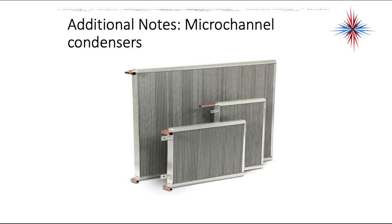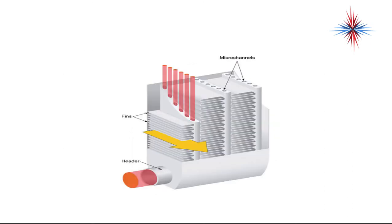Microchannel condensers are becoming very popular on high-efficiency equipment. They use very small micro-channels from a header or manifold refrigerant tubing — a way to increase surface area and expose more refrigerant tubing to air.